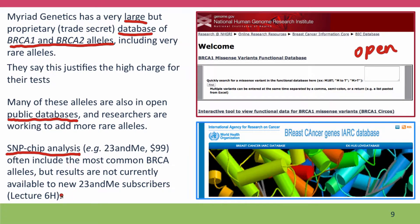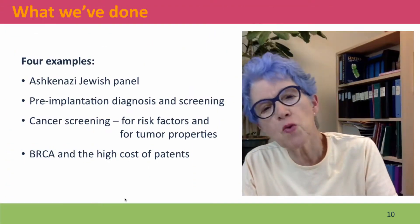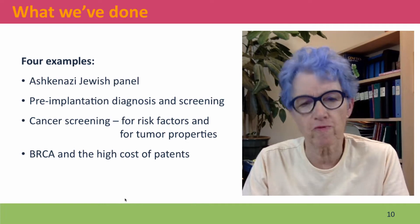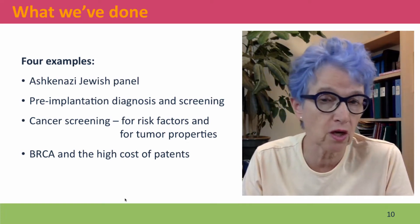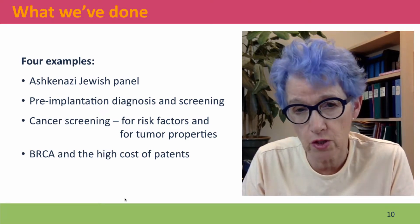Unfortunately, if you're interested in getting this information for $99 on SNP chips — which are very good value — the problem is that due to concerns about whether people should be allowed access to their own genetic information, 23andMe is currently not allowed to provide this information to new subscribers.